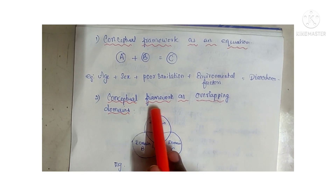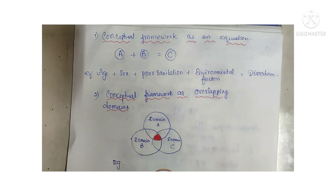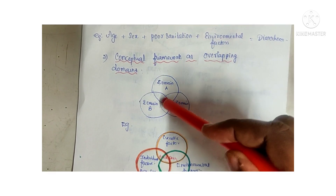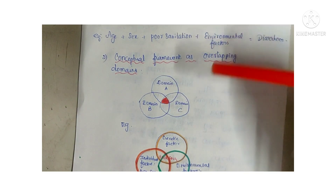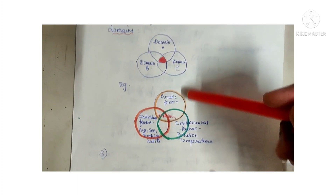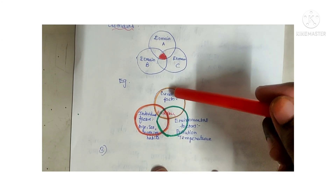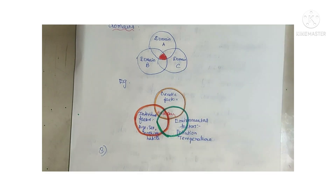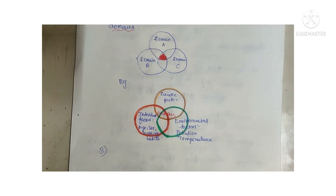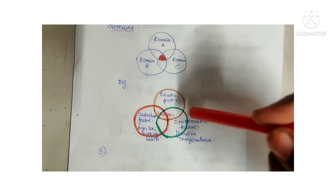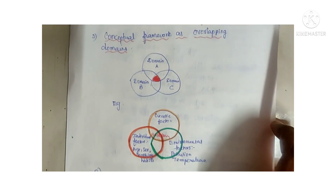Conceptual framework as overlapping domains: similar to a Venn diagram, Domain A, Domain B, and Domain C are all interrelated to a particular aspect. For example, for the condition hair fall, genetic factors, individual factors (age, sex, personal hygiene habits), and environmental factors (water condition, pollution, temperature, climate) all have an impact — overlapping to influence hair fall.